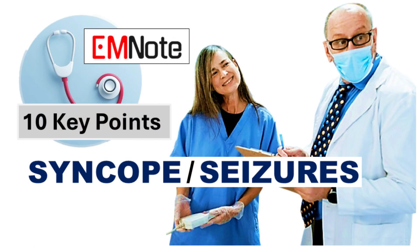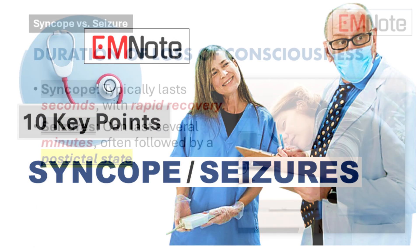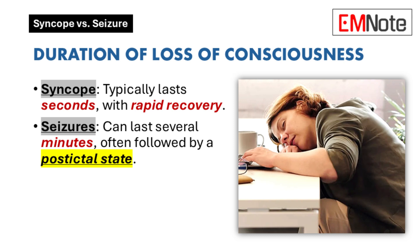10 Key Differences Between Syncope and Seizures. Duration of Loss of Consciousness: Syncope typically results in a brief loss of consciousness, lasting only a few seconds, and patients recover quickly and fully. In contrast, seizures can cause a loss of consciousness that lasts several minutes. After a seizure, individuals may experience a post-ictal state characterized by confusion, fatigue, or other neurological deficits.